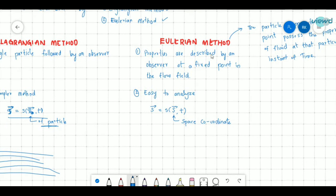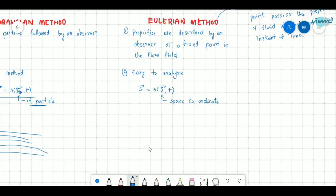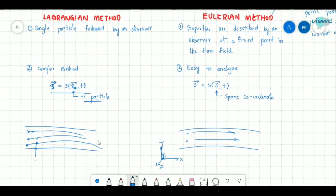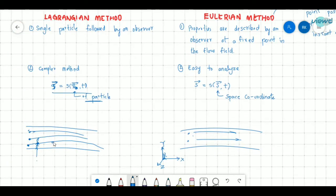In Eulerian method, properties are described by an observer at a fixed point in the fluid flow. So here there is fluid flow of these particles and there is origin of coordinate system. Say this is x, this is y, and this is z. In Eulerian method, the observer is here. In this method, the observer travels with the particle. But in this case, the observer looks from this origin at every point of the fluid.